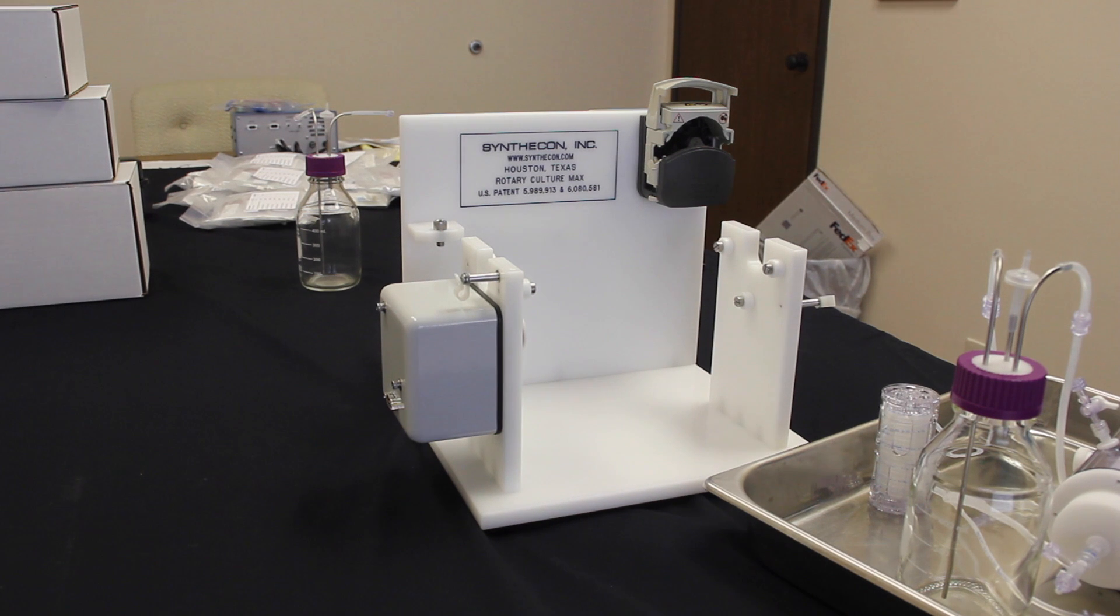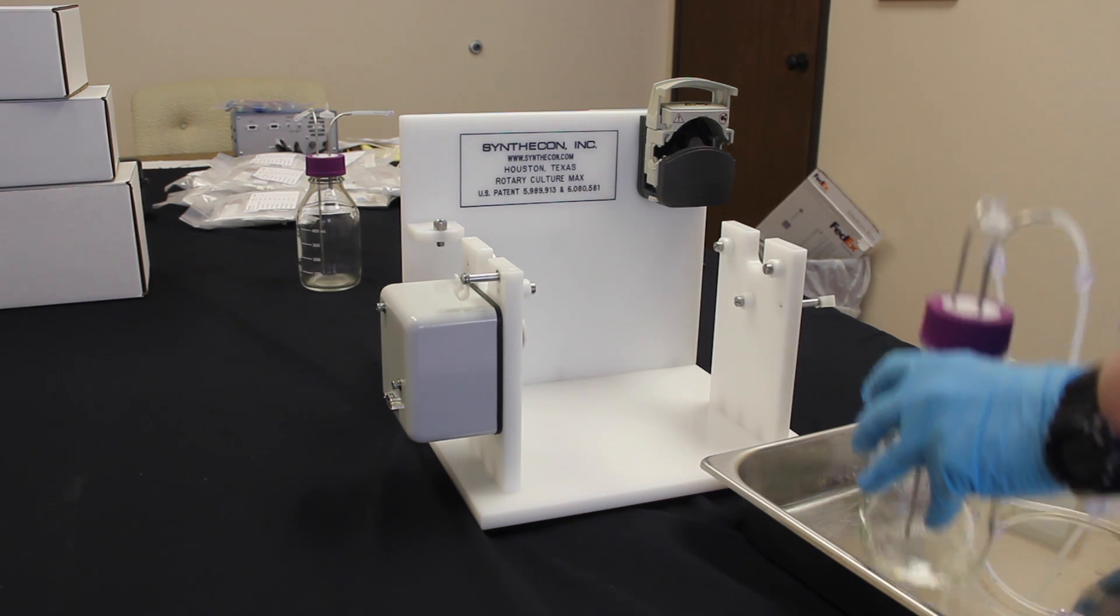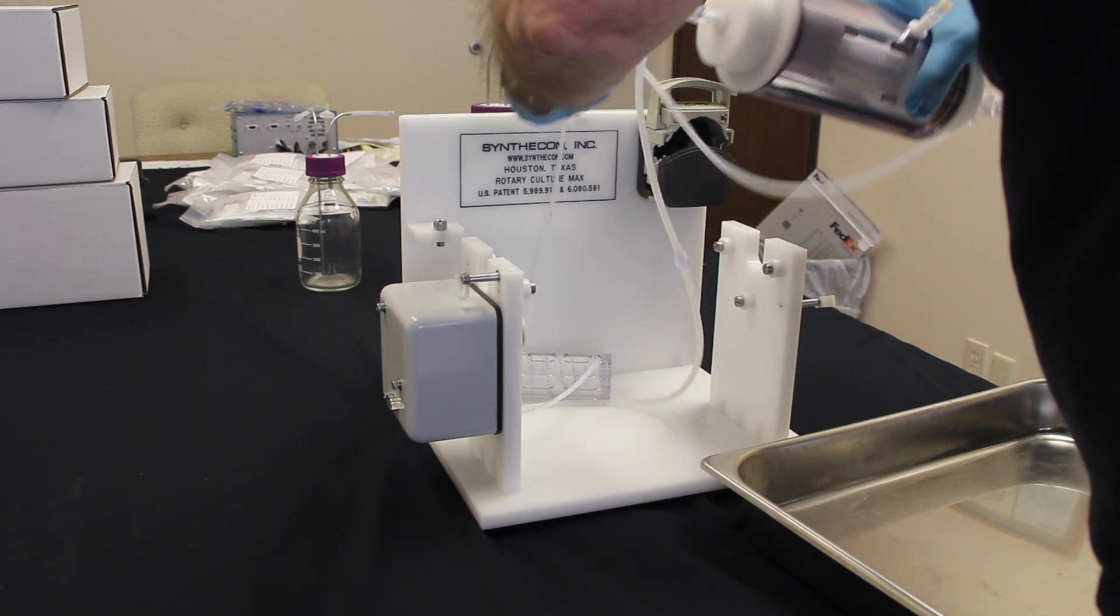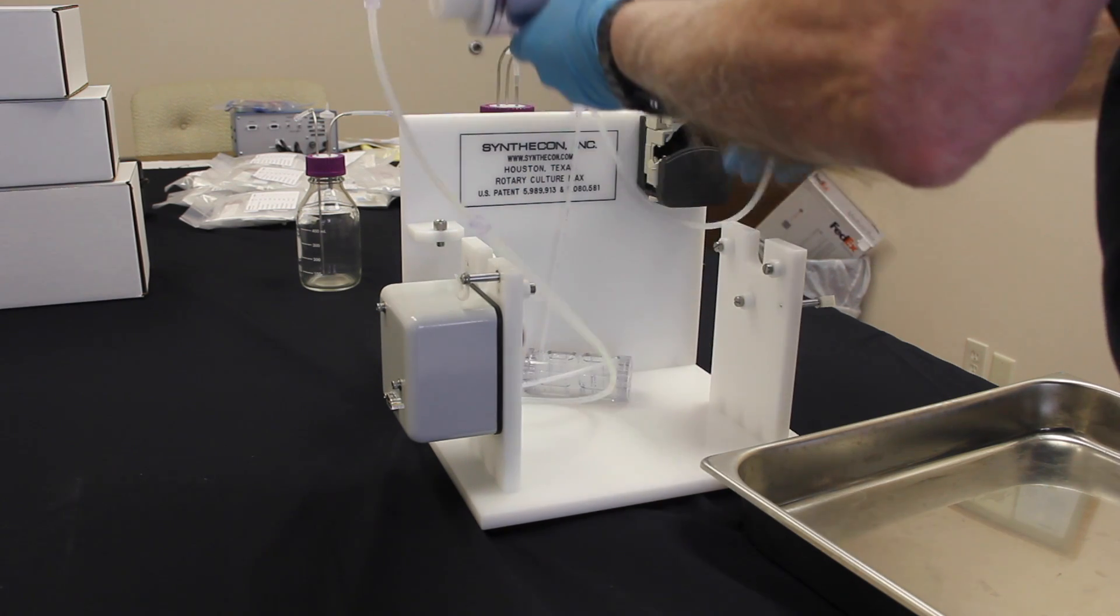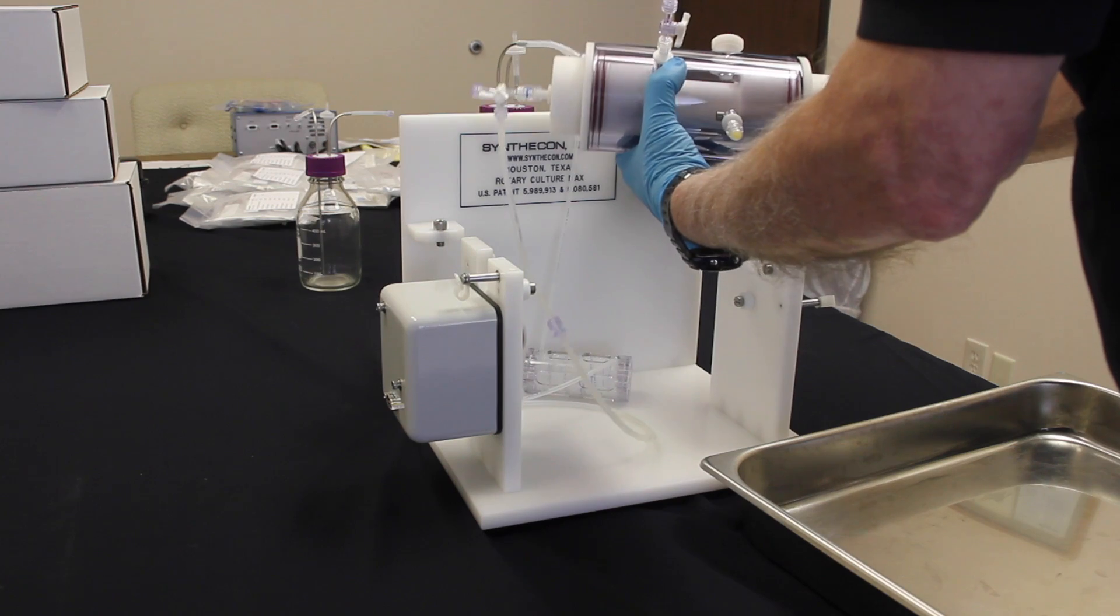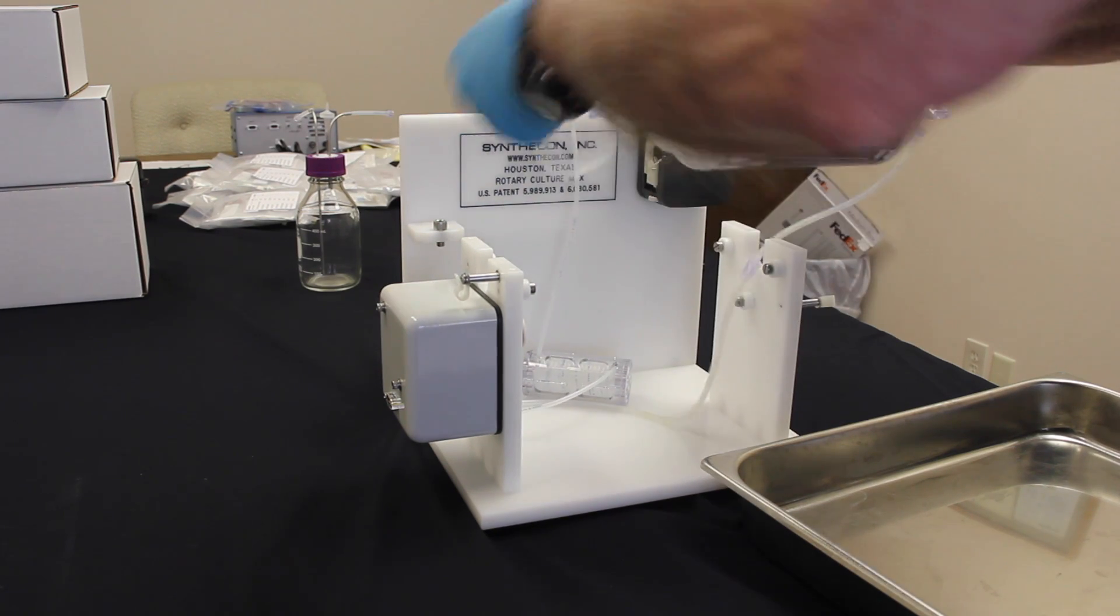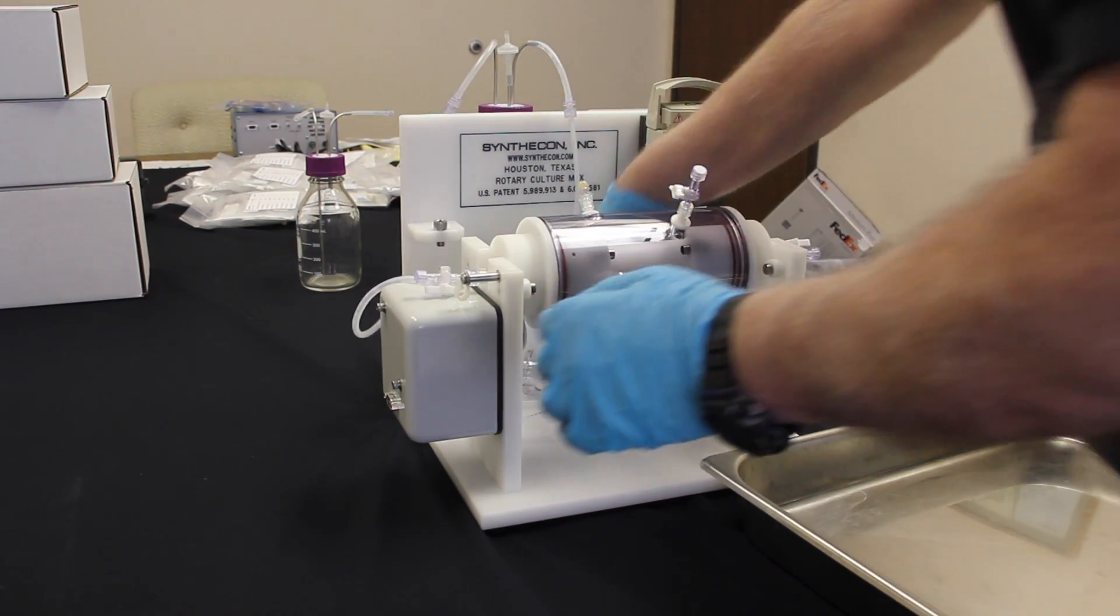Okay, we now have our assembly that we have brought over to the rotator base. First, you can take the vessel and the media bottle. Place the media bottle in the reservoir, basically the space that holds the bottle in the back of the rotator base. Then, paying attention to the inflow and the outflow sides, you have to turn the vessel in the correct orientation and place it in its cradle.